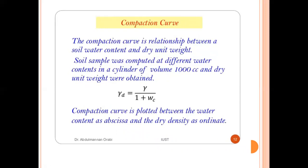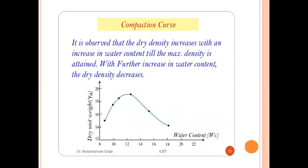The compaction curve represents the relation between soil water content and dry unit weight. Soil samples are compacted at different water contents in a cylinder of volume 1,000 cc (cubic centimeters), and dry unit weights are obtained using: gamma_d = gamma / (1 + w). The compaction curve is plotted between water content on the x-axis and dry density on the y-axis, indicated as gamma_d versus wc.